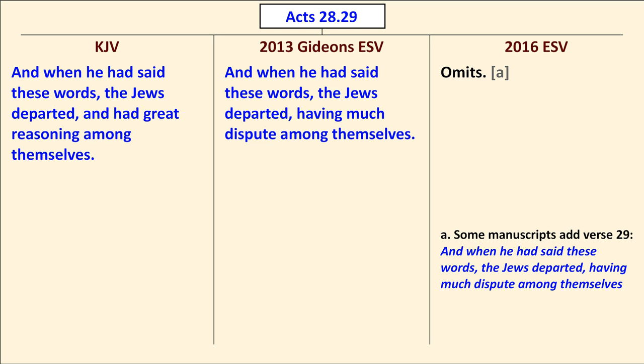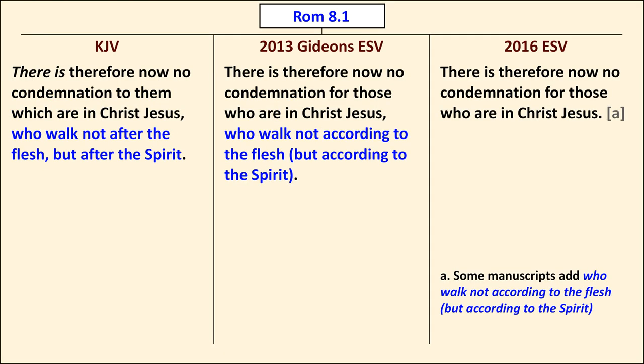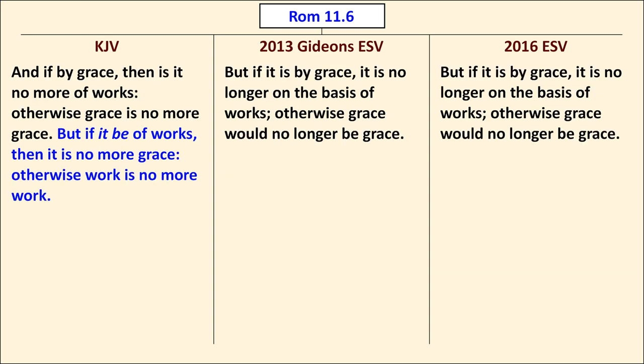In Acts 28:29, the material from the 2016 ESV's footnote has been moved into the Gideon's ESV text, so it agrees with the TR. In Romans 8:1, it also agrees with the TR, ending the verse with "who are in Christ Jesus, who are not according to the flesh but according to the Spirit" — material that is in a footnote in the 2016 ESV. In Romans 11:6, however, the material "but if it be of works, then it is no more grace — otherwise work is no more work" is absent from the Gideon's ESV, which continues to follow the 2016 ESV.